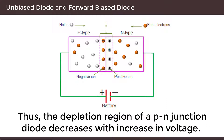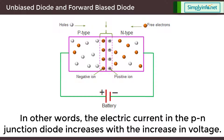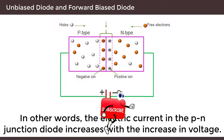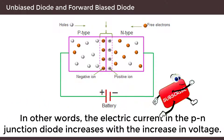Thus, the depletion region of a PN junction diode decreases with increase in voltage. In other words, the electric current in the PN junction diode increases with increase in voltage.